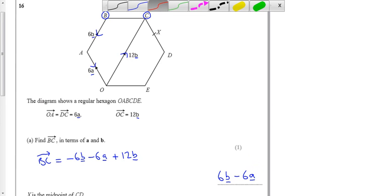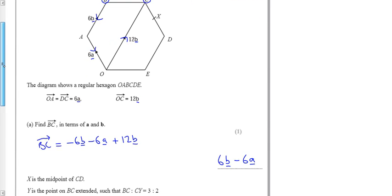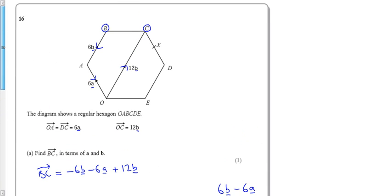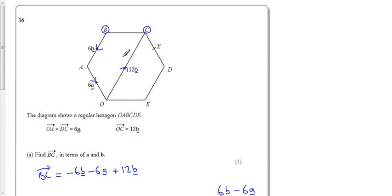Now, if I change to red, it tells me for the second part, it tells me X is the midpoint of C to D, so that's the middle between C and D.